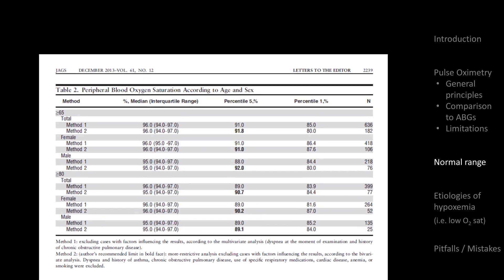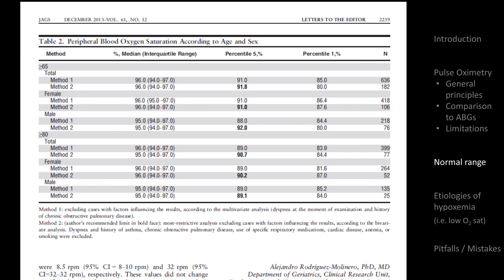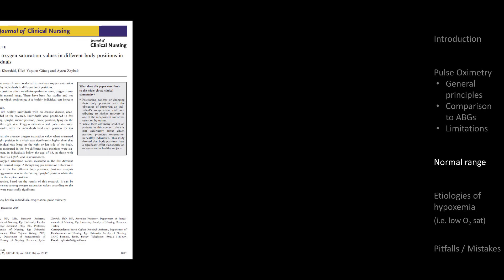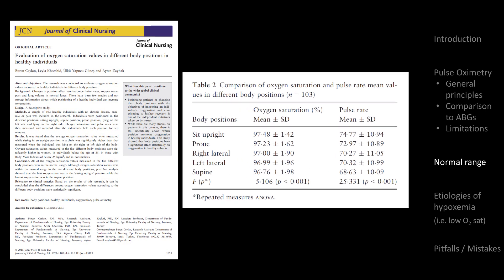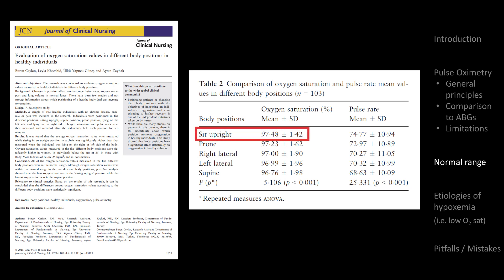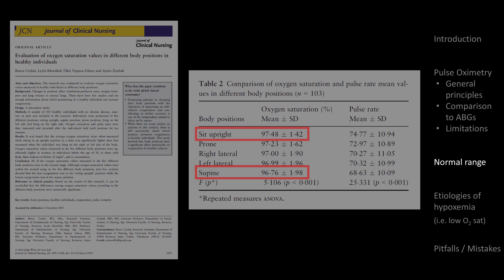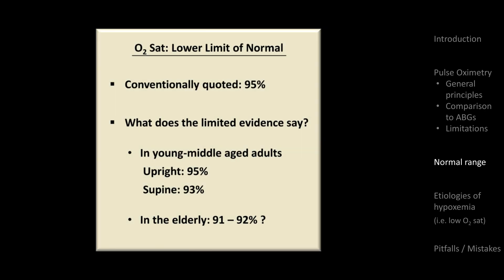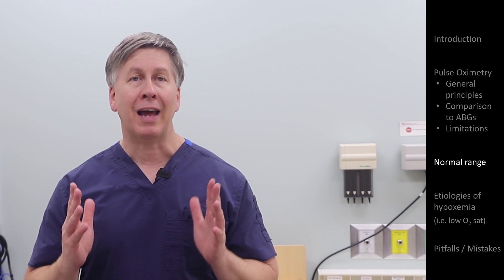In one study of 791 patients age 65 and older, the lower limit of normal was determined to be 91% when considering the entire cohort except those with COPD, and 92% when also excluding those with cardiac disease, anemia, and a history of smoking. In another study of 103 healthy individuals with a mean age of 33, the lower limit of normal as determined by two standard deviations from the mean varied from 95% when sitting upright to 93% while supine. And in a third study of 290 healthy individuals with a mean age of 61, the lower limit was determined to be 92%.